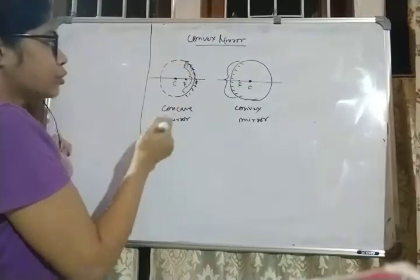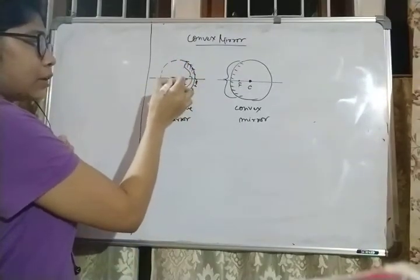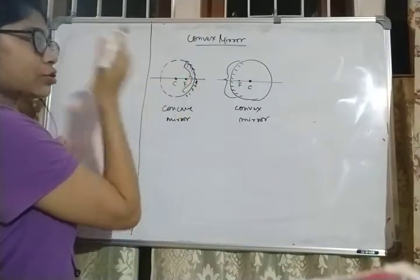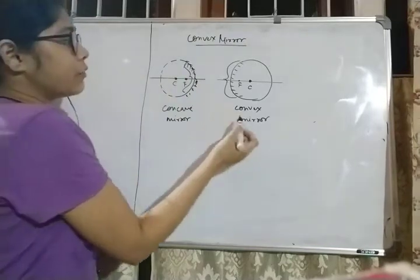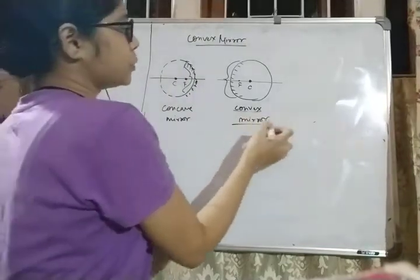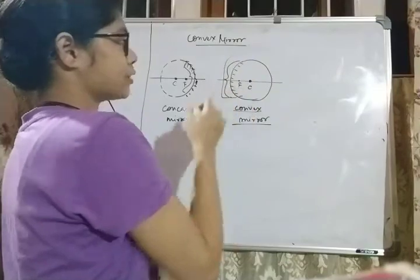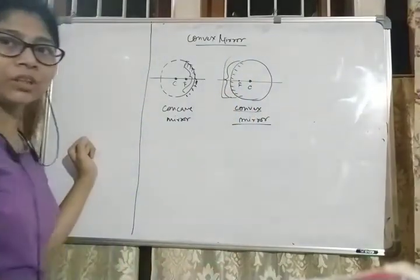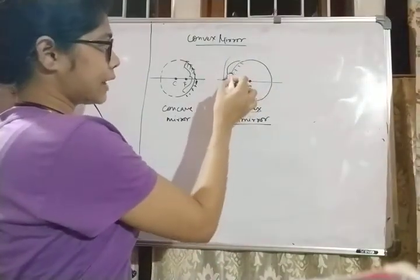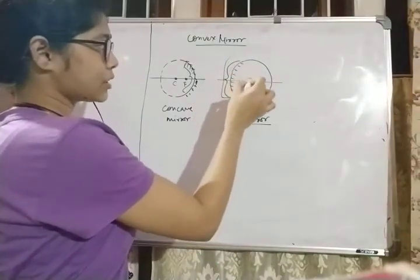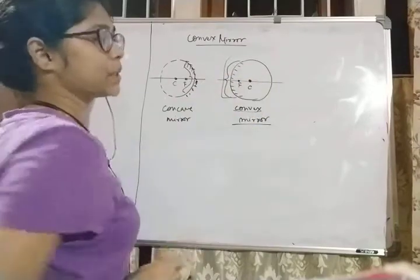For the convex mirror, the reflecting surface is the outer side. The focus and center of curvature are positioned accordingly on that side.